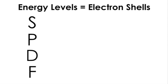The energy levels are also referred to as the electron shells. As the energy level increases in number — 1, 2, 3, and so on — the energy shell increases in size. The electron shells can have one or more subshells, which are referred to as the S, P, D, and F subshells.